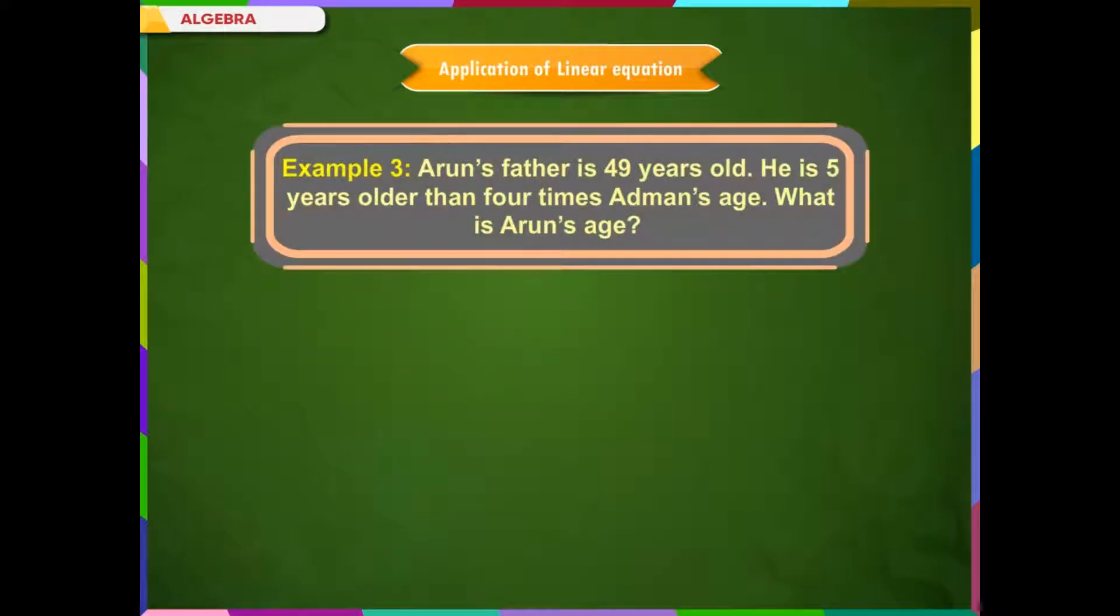Example 3: Arun's father is 49 years old. He is 5 years older than 4 times Arun's age. What is Arun's age?